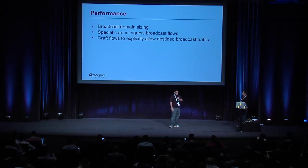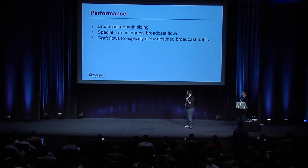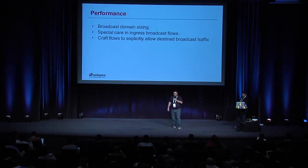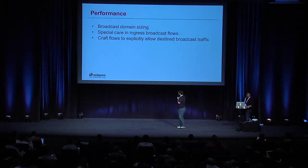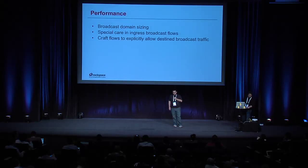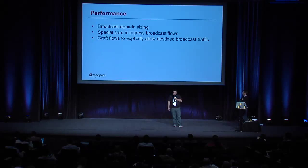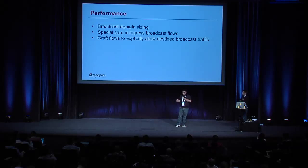Some things that can impact performance for a public cloud use case: broadcast domain sizing and specific attention to broadcast-related flows. A lot of times broadcast traffic goes to every node, every VIF, and instead of OVS dropping the flows it doesn't need, it goes all the way to each VIF anyway, spending CPU cycles on traffic that's not relevant to your host.